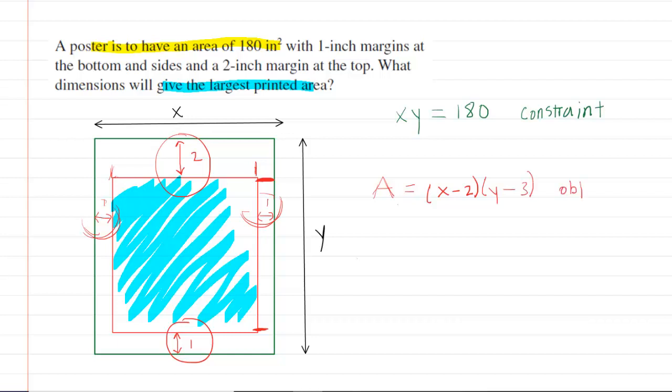And this is what we would call our objective equation. Typically what you want to do next is you want to go back to your constraint and solve it for Y. In order to solve for Y, we could divide both sides of our constraint by X.